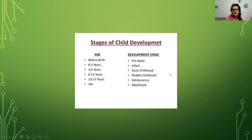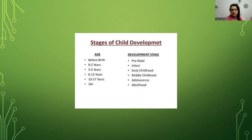Then come the stages of child development. Before birth is the prenatal stage. From zero to two years it is infant, three to five years is early childhood, six to twelve years is middle childhood, thirteen to seventeen years is adolescence, and eighteen and above is adulthood.